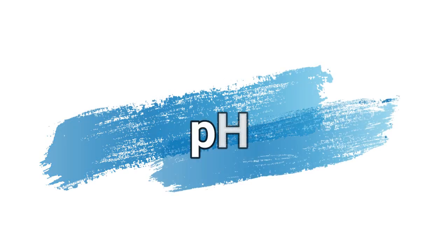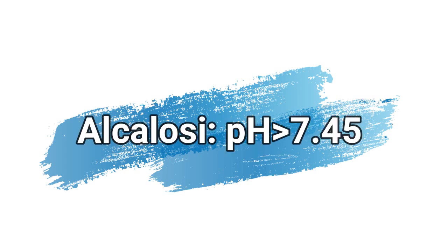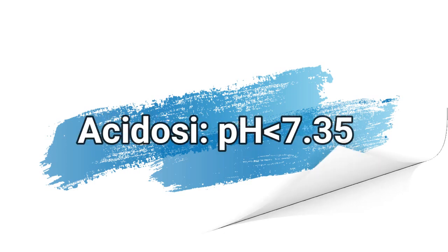Il pH esprime il carattere acido o basico di una soluzione. Nel sangue, il pH normalmente si assesta su valori compresi tra 7,35 e 7,45. Un valore di pH nei range di riferimento indica gas ematici nella norma oppure uno squilibrio compensato. Se il pH è maggiore di 7,45 parliamo di alcalosi; se è minore di 7,35 parliamo di acidosi.